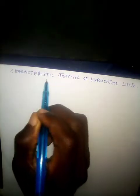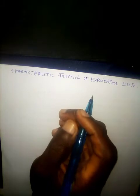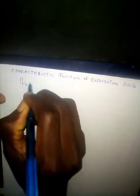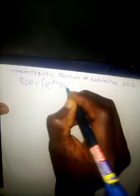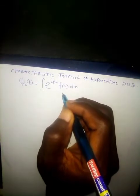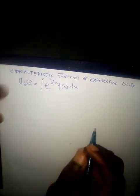Today we'll be looking at the characteristic function of an exponential distribution. First, we consider the characteristic function of the continuous distribution, which is given as phi subscript x of t equals the integral of exponential i theta t x times f of x dx, where f of x represents a particular distribution. Now we consider the exponential distribution.